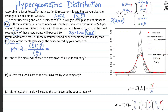Computing this: 6 choose 0 is one, which is 6 factorial divided by 6 factorial. Then 14 choose 5 is 14 factorial divided by 5 factorial times 9 factorial. The denominator, 20 choose 5, is 20 factorial divided by 5 factorial times 15 factorial. If you do this calculation, you end up with approximately 0.1291 — about a 12.9% chance that you end up not selecting any expensive restaurants.